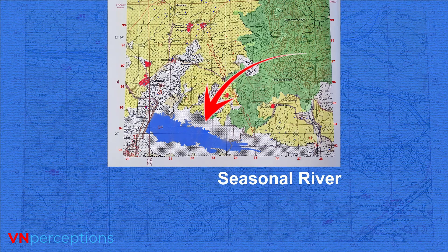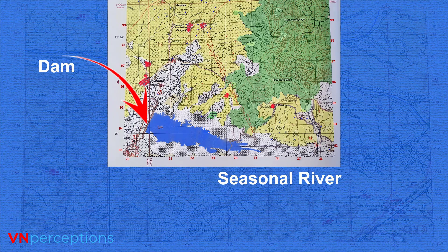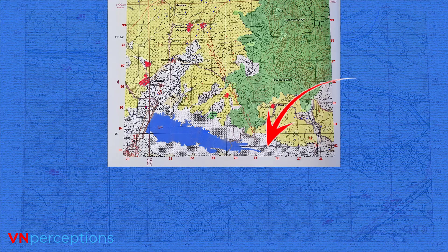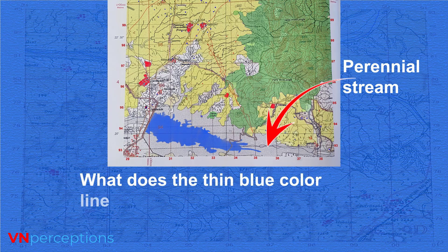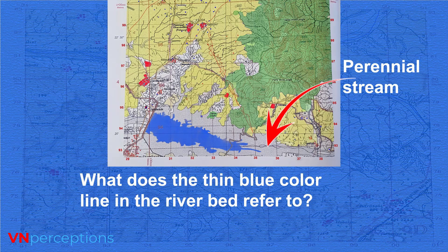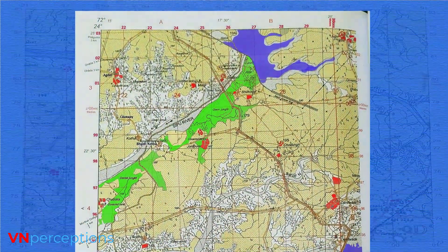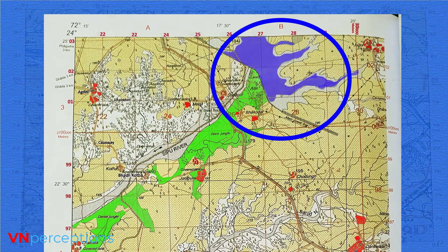Only in the rainy season will you see water in this seasonal river; the rest of the time it is dry. However, because there is a dam ahead, a reservoir is formed and this reservoir is perennial — water is available throughout the year. If you look carefully at the river, you will see a thin blue color line, which refers to a perennial stream within the river bed. In the exam, when asked what this thin blue line represents, the answer is a perennial stream.